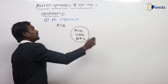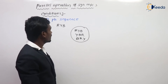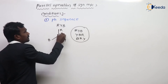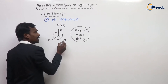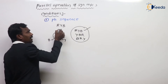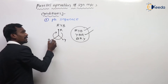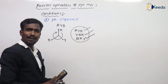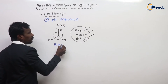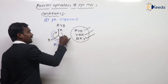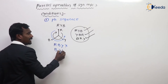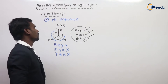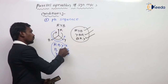There are three possibilities of same phase sequence: RYB, YBR, and BRY — these are all positive phase sequences. However, RBY, YBR reversed, and YRB are negative phase sequences. These three are the negative phase sequences and those three are the positive phase sequences.